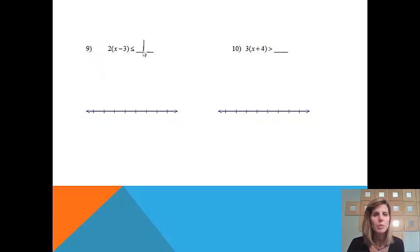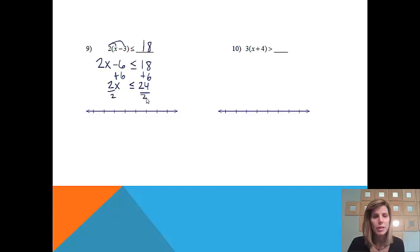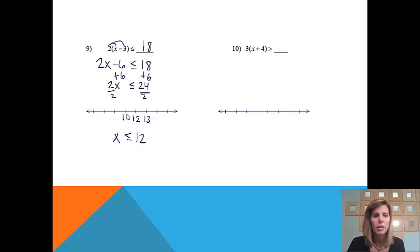Number 9: 2 times (x minus 3) is less than or equal to 18. Just like solving equations, the first thing we do is distribute: 2x minus 6, still less than or equal to 18. Next, add 6 to both sides: 2x is less than or equal to 24. It's important to keep bringing down the inequality sign throughout. Then divide both sides by 2: x is less than or equal to 12. To graph it, start at 12 — there is an equal sign so we close the circle — and shade all numbers to the left.